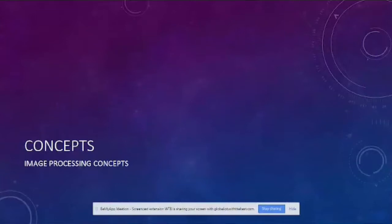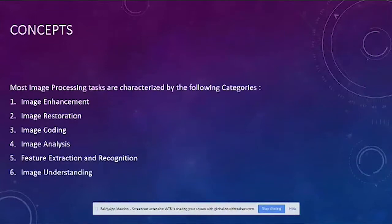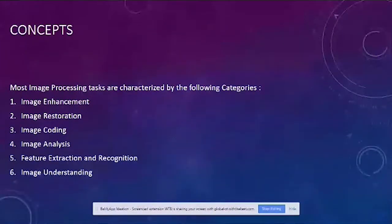To start with the concepts of image processing: it is majorly characterized by six operations. The first involves image enhancement, second is restoration, then coding, image analysis, and then the part of classification comes in — where we do feature extraction, recognition, and then image understanding.